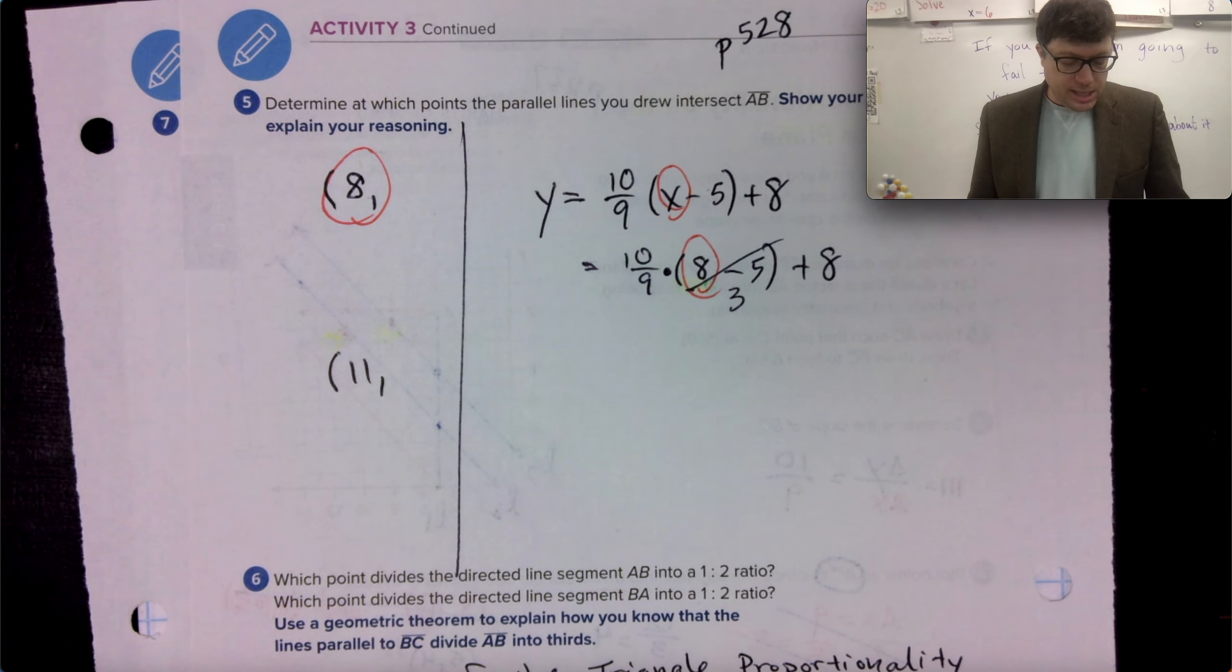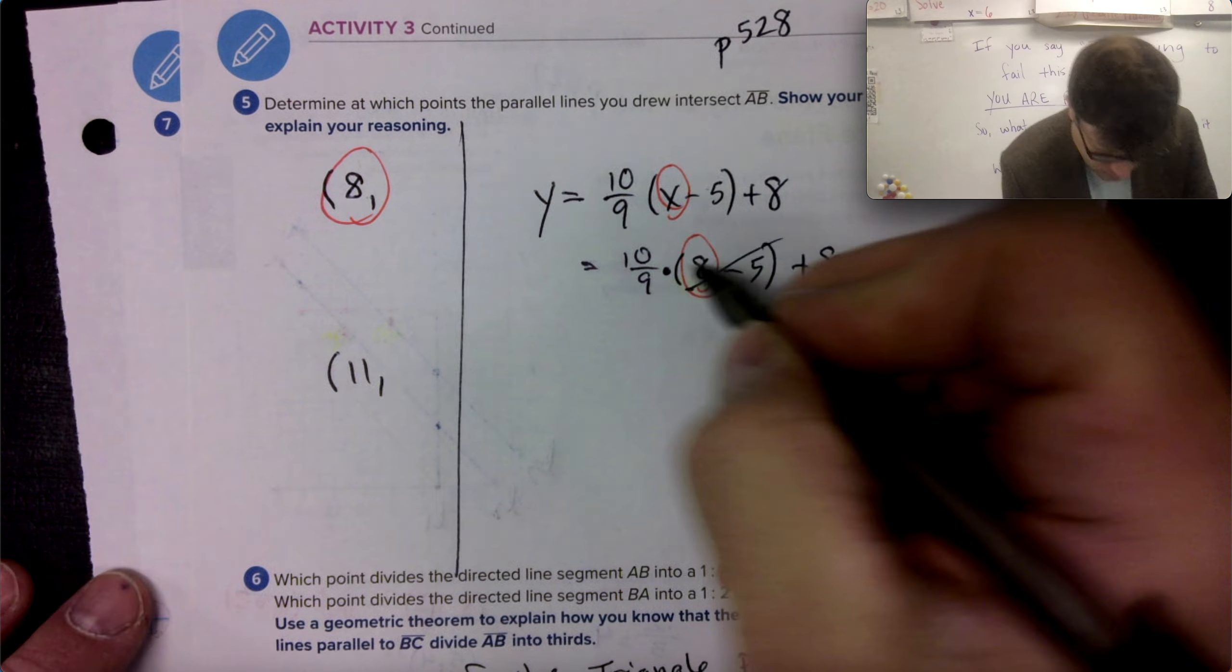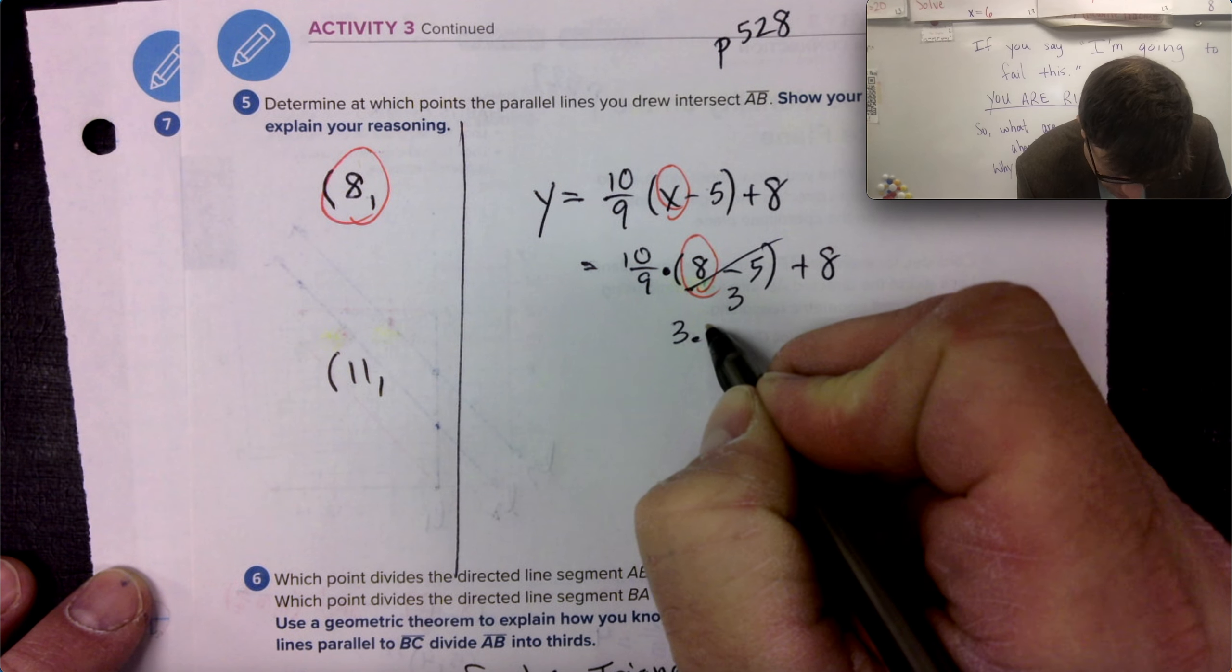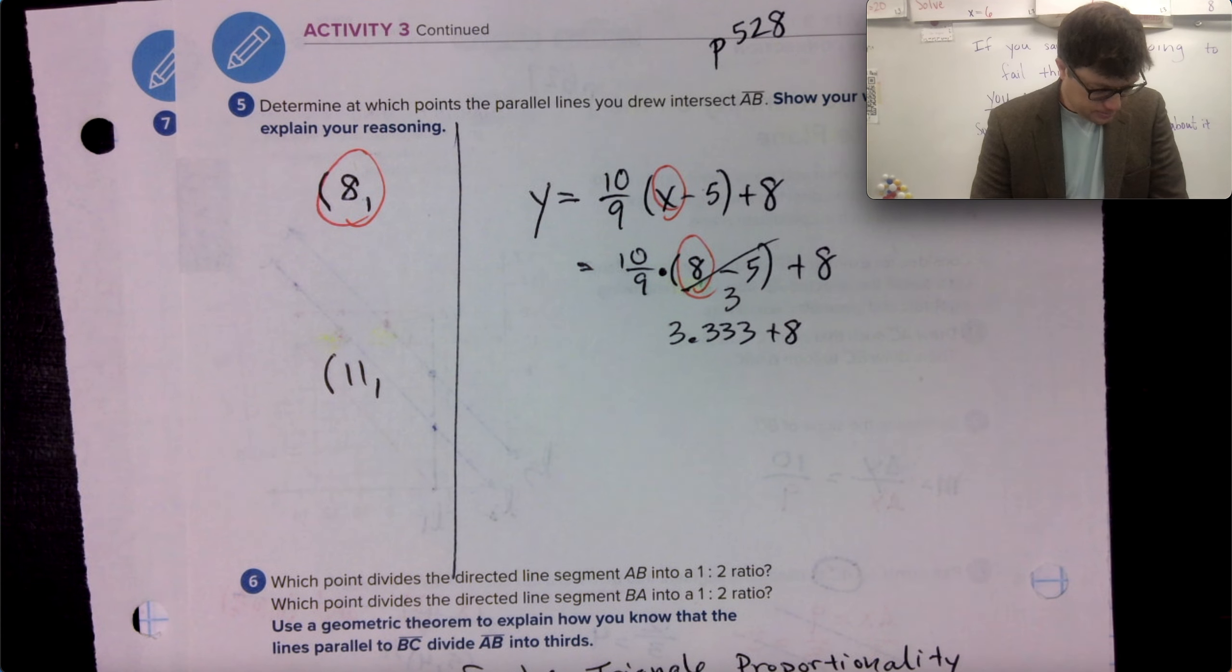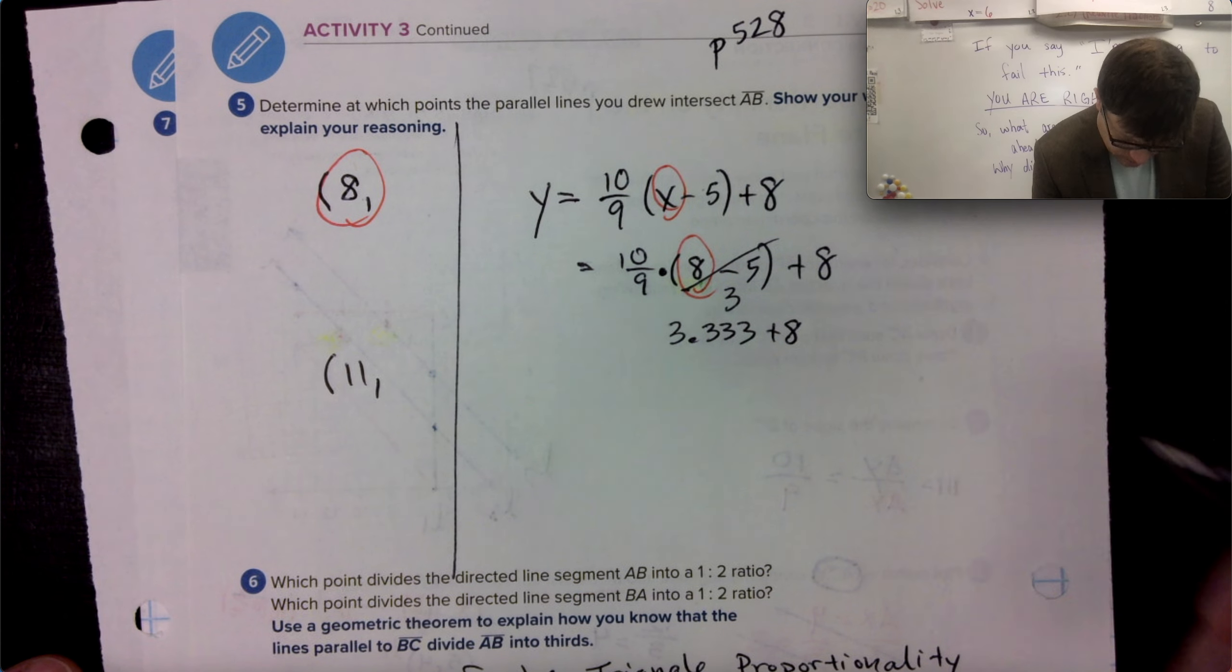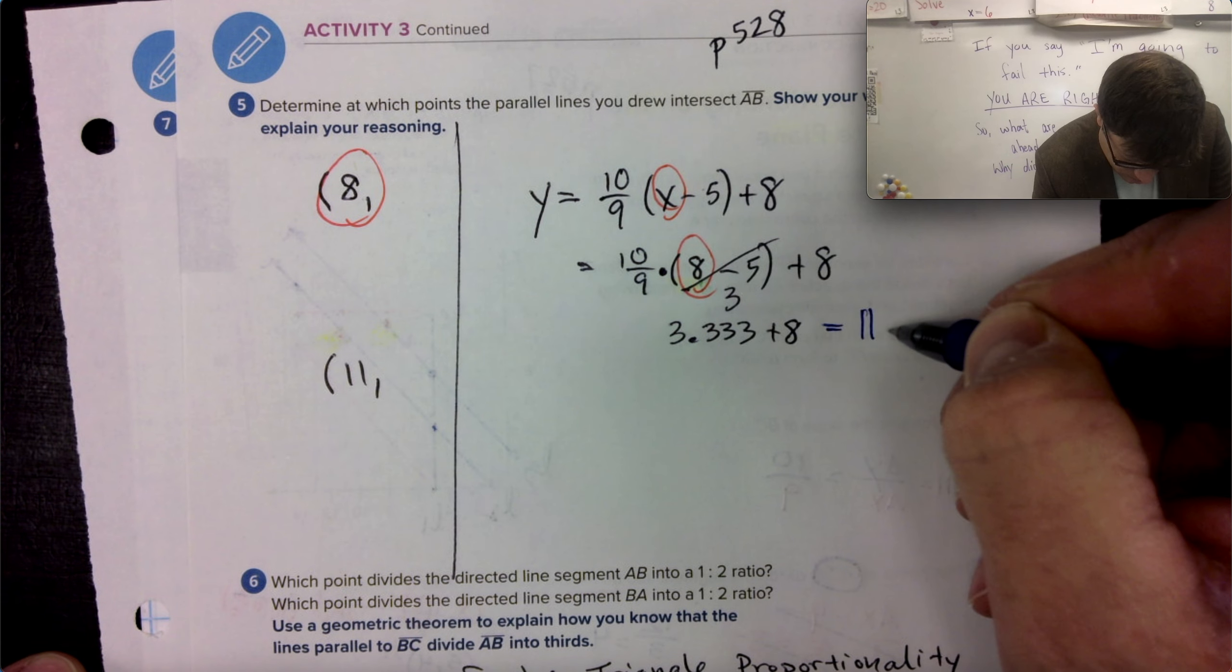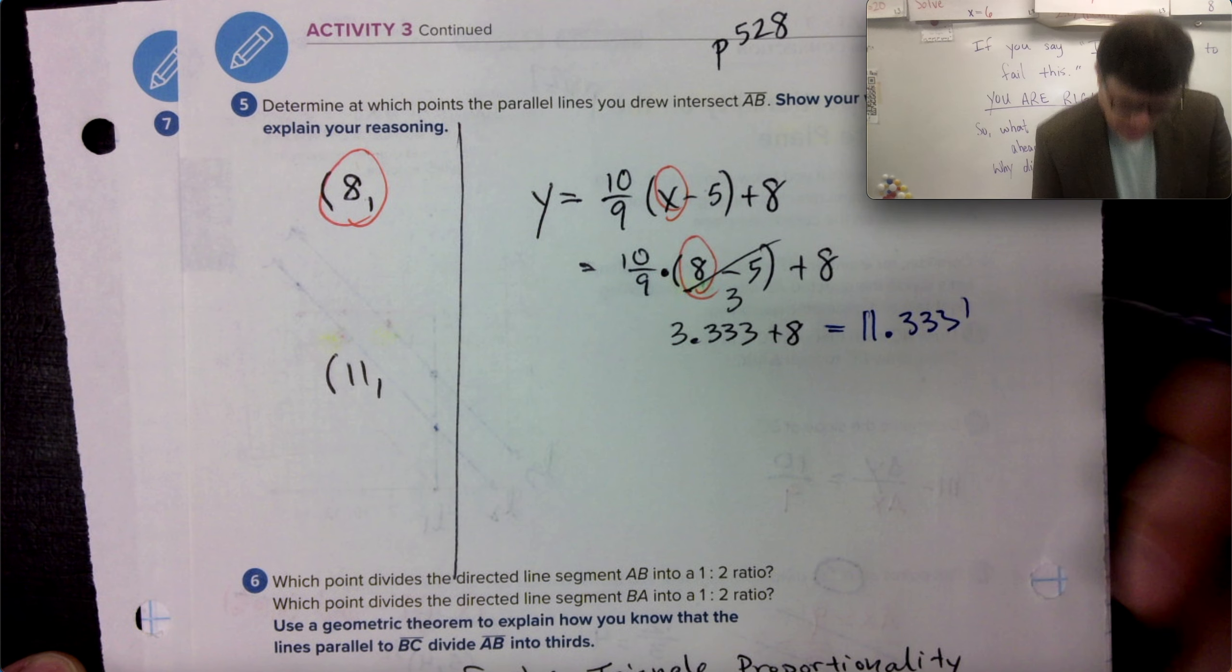Hey Siri, what's 10 divided by nine times three? 10 divided by nine times three is approximately 3.3333. 3.333 plus eight. Hey Siri, what's that answer plus eight? 3.3333 plus eight is approximately 11.3333.